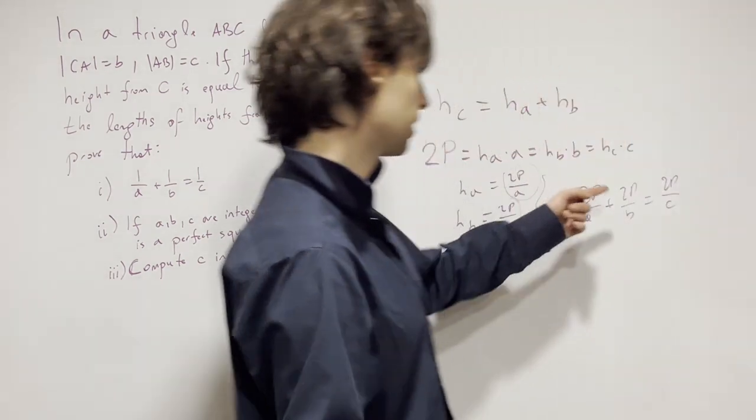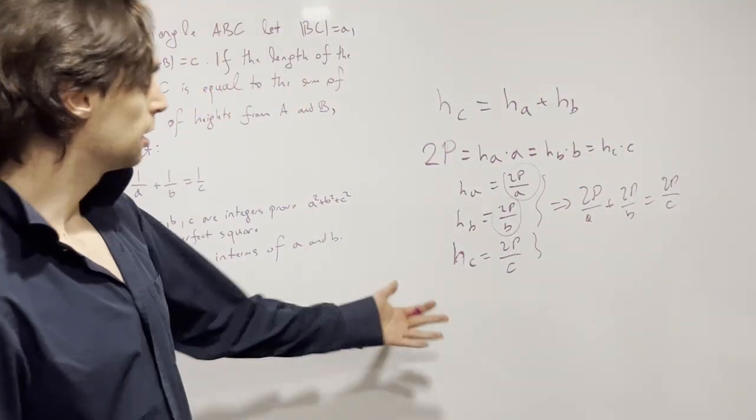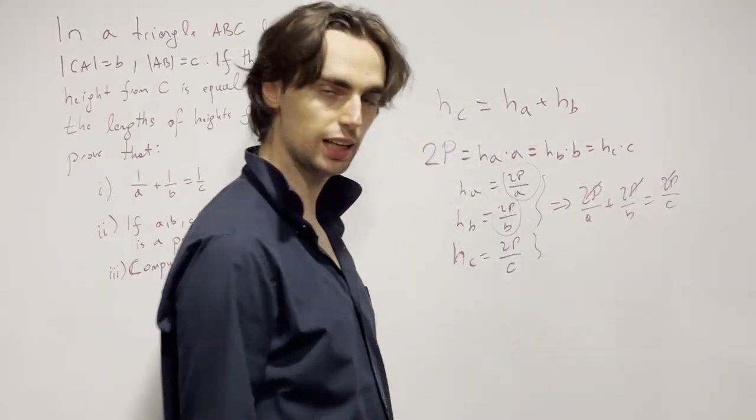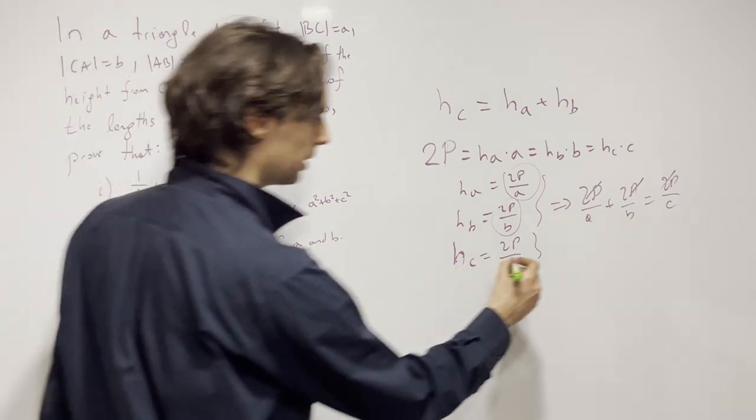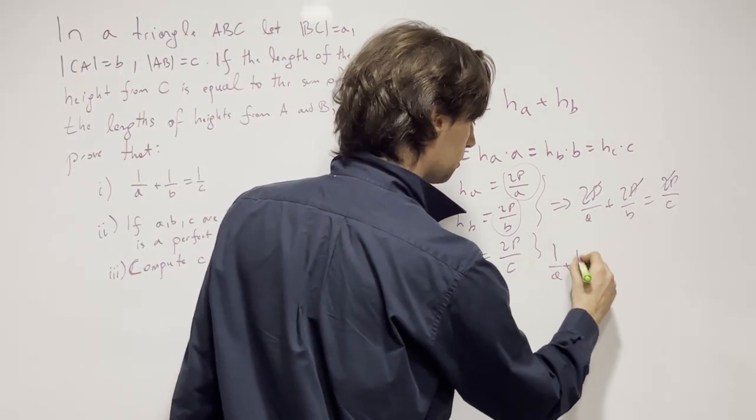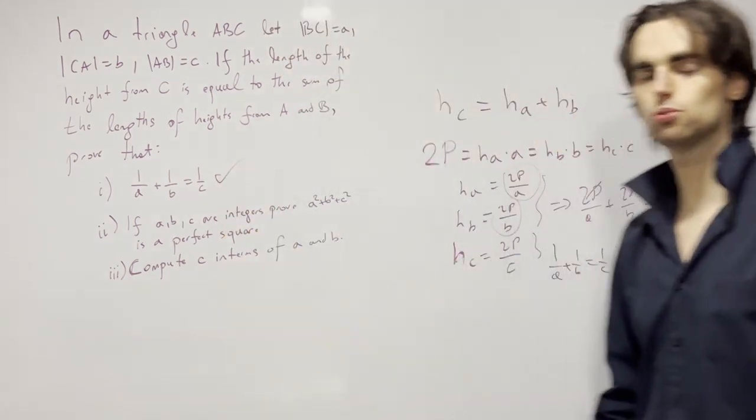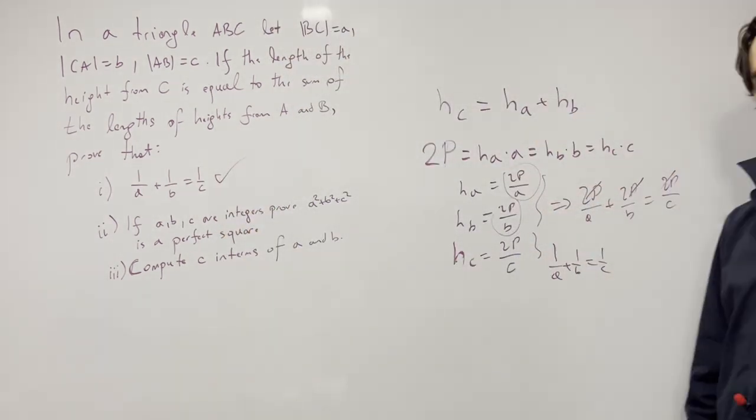Now what do we do? Well the area is positive so we can cancel these ones out dividing by the area and we get that from here it follows 1 over A plus 1 over B is 1 over C, bam, what we need to prove right here. And now let's move on to the next one.